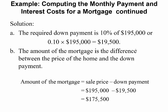Let's find the required down payment. We're told the required down payment is 10%, so 10% of $195,000 is $19,500. The amount of the mortgage — how much you need to borrow from the bank — is the sale price minus the down payment: $195,000 minus $19,500, so you will borrow $175,500 from the bank.